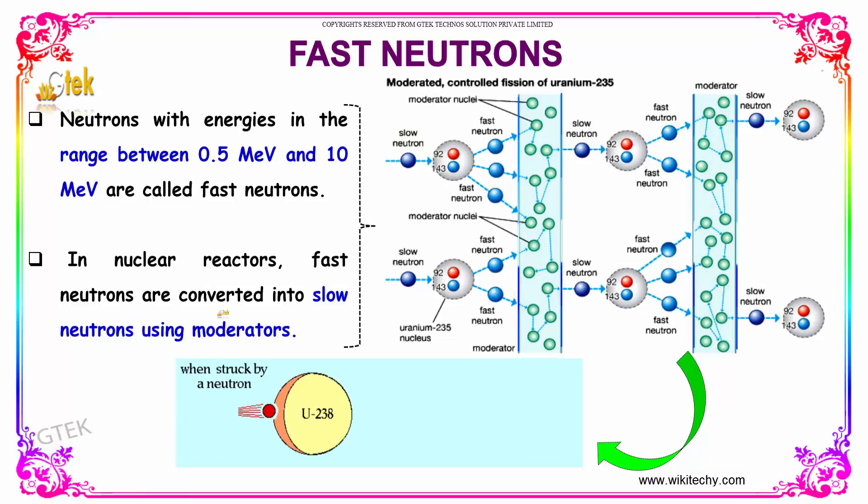In nuclear reactors, fast neutrons are converted into slow neutrons using moderators. You can see here, the slow neutron during fission becomes a fast neutron. Using the moderator, it becomes a slow neutron once again. Don't forget to subscribe.